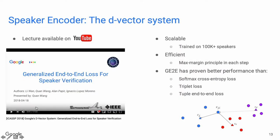I also uploaded my lecture on this system to YouTube, so you can watch that video if you are interested. Our D-vector system is a highly scalable system trained on hundreds of thousands of speakers. It's very efficient and has proven better performance than other systems like cross entropy, triplet loss, or tuple n-to-n loss.